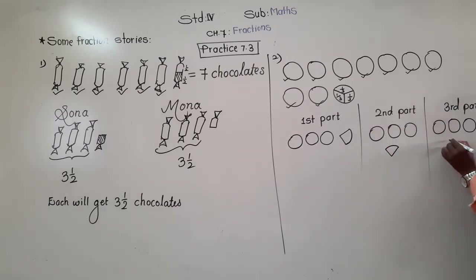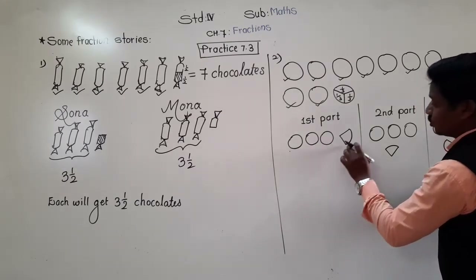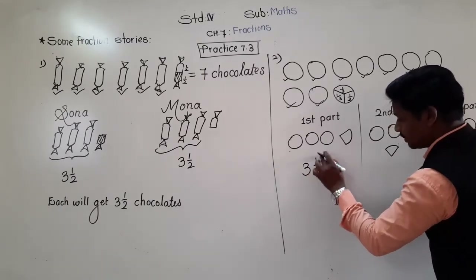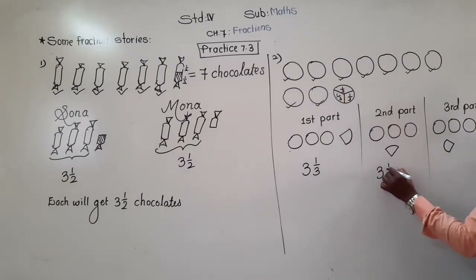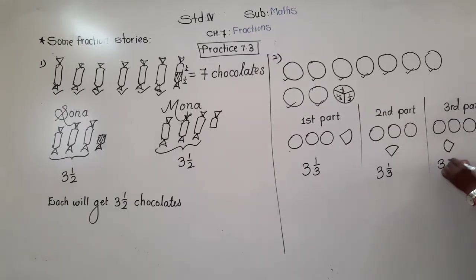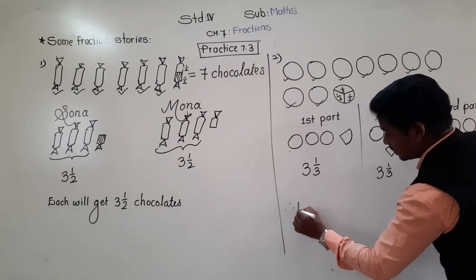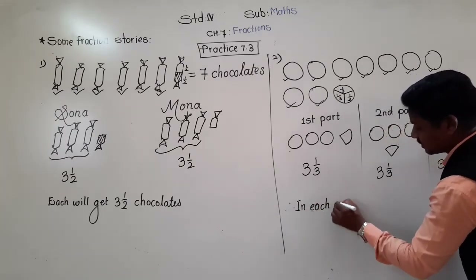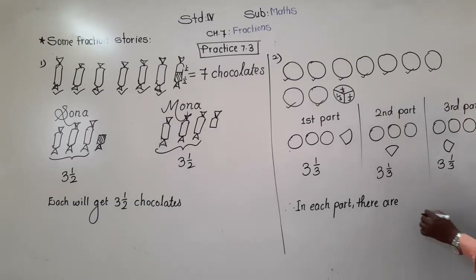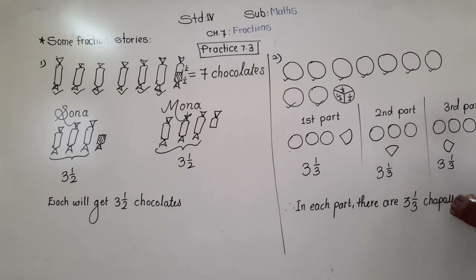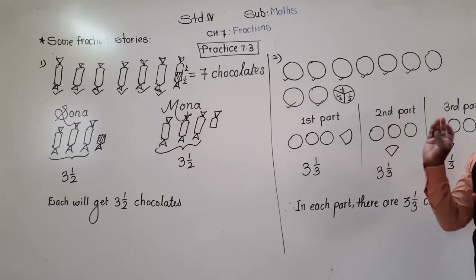I take 1 third piece and place it in the 1st group, another 1/3 in the 2nd group, and the last 1/3 in the 3rd group. So each group now has 3 whole chapatis and 1/3. Here also 3 whole chapatis and 1/3, and the 3rd group also has 3 whole and 1/3. So in each part there are 3 and 1/3 chapatis.